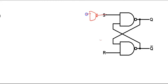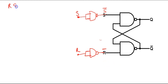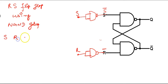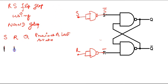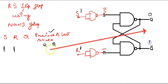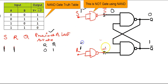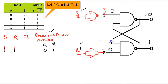Now we are coming to the same SR latch using NAND gates. This NAND gate behaves as a NAND. So this is the RS flip-flop using only NAND gates. S, R, Q, and the previous state — the last state. Let me start with inputs S = 1, R = 1, and assume the previous state Q = 0, Q complement = 1.